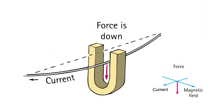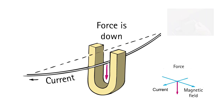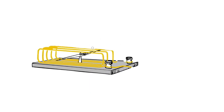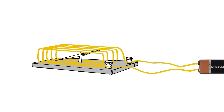Reverse the current, and the deflection is also reversed. Now, consider the magnetic needle of a compass hovering under loops of a wire. What might happen when a current passes through the loops? The needle will turn.